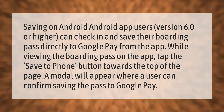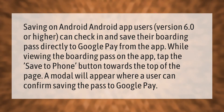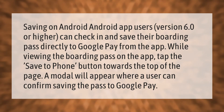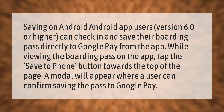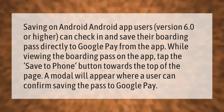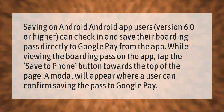Android app users on version 6.0 or higher can check in and save their boarding pass directly to Google Pay from the app. While viewing the boarding pass on the app, tap the 'Save to Phone' button towards the top of the page. A modal will appear where you can confirm saving the pass to Google Pay.